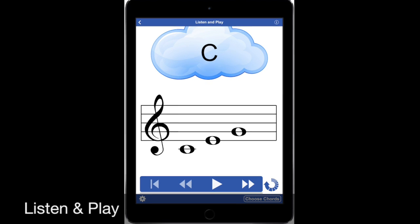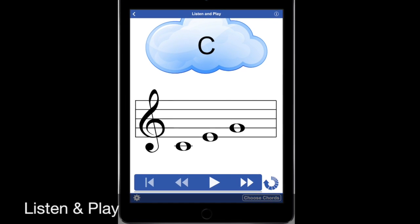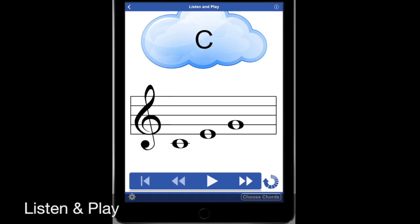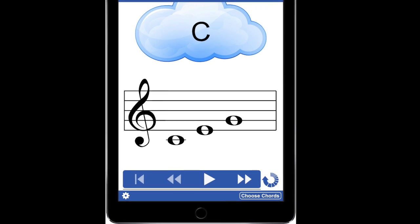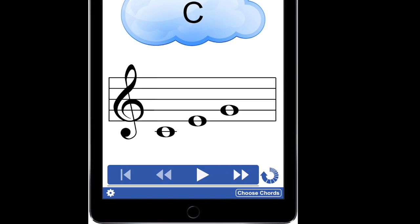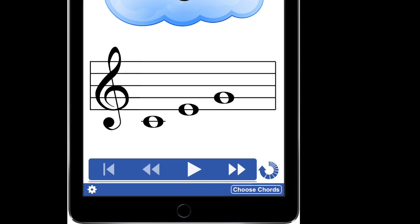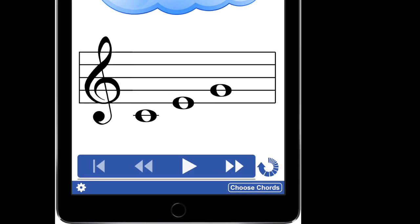Now we've opened up the Listen and Play screen. You'll notice that there's a score there with a triad. We have our cloud with a C triad indicated, and you have a series of controls: forward, play, reverse, start back over. This little half circle, semicircle over to the right, that's to refresh the chord progression. Once you hit that, you're going to get another unpredictable chord progression based on the chords that you've selected.